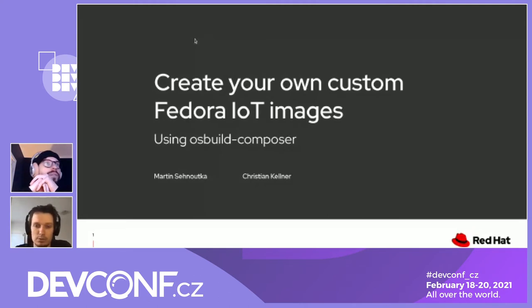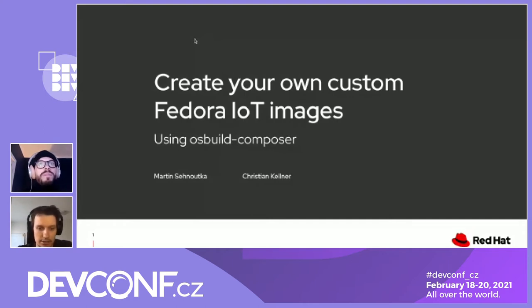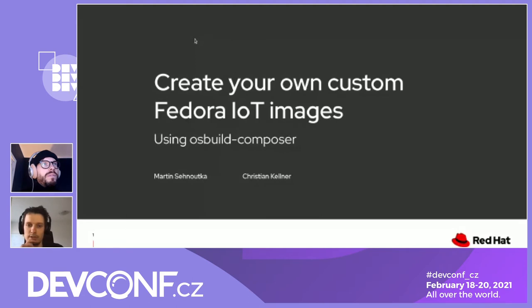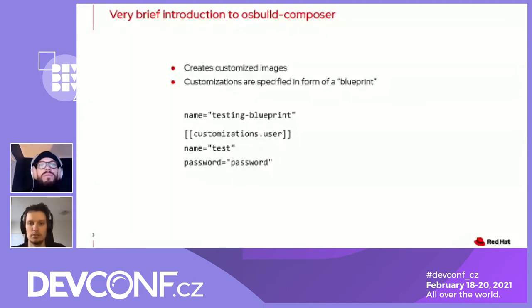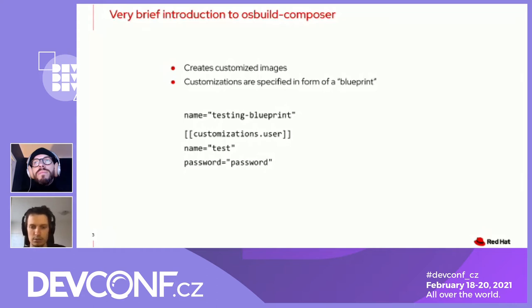You can deploy OS Build Composer locally, and it is based on OS Build, which was presented at DevConf last year, and you can find a link in these slides. OS Build Composer is a web service for creating customized operating system artifacts. To specify the customization, you need to create something we call a blueprint. You can see a very simple example here — it's a TOML file. In this example, I created one user with name test and password password. But you can also install additional RPM packages, enable systemd services, and many other customizations.